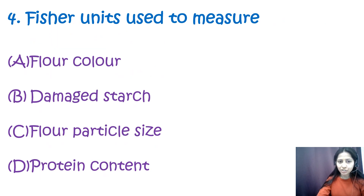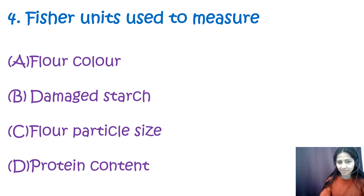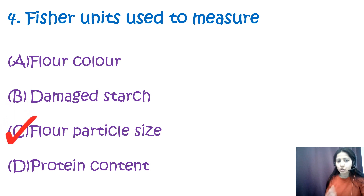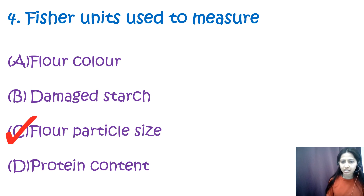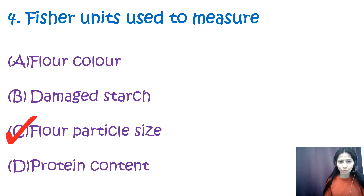Question 4: Fisher unit is actually used to measure — flower color, damage starch, flower particle size, or protein content? The correct option is C — flour particle size. The Fisher unit method is based on air permeability and is used to measure flour particle size. Flour color, damage starch, and protein content are measured using other methods.